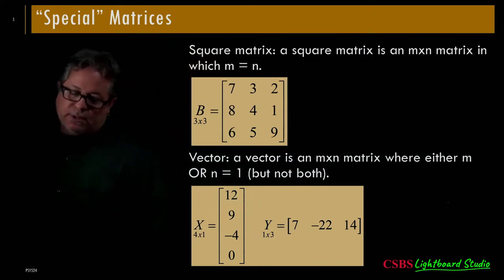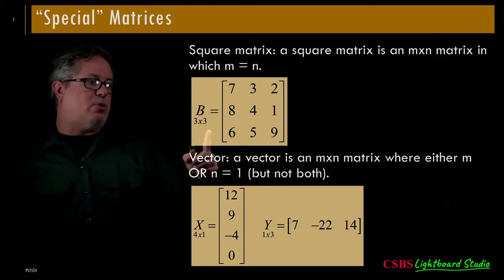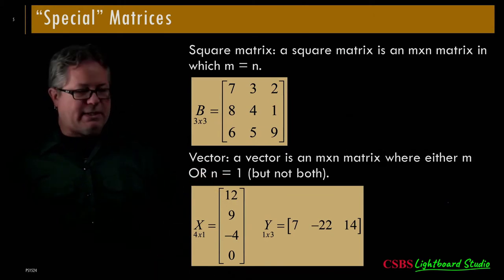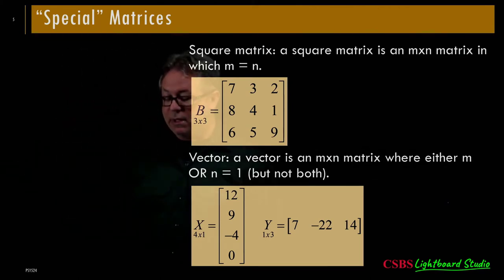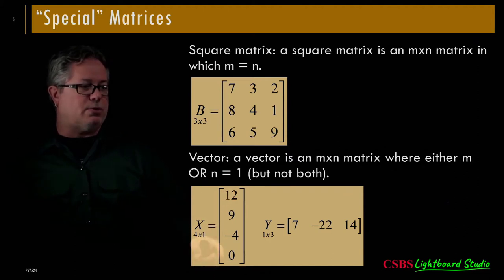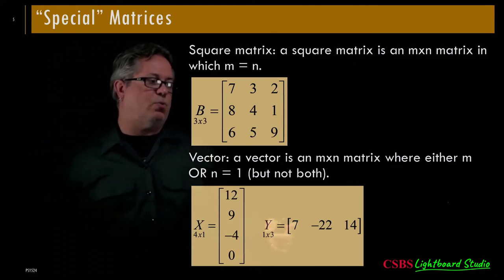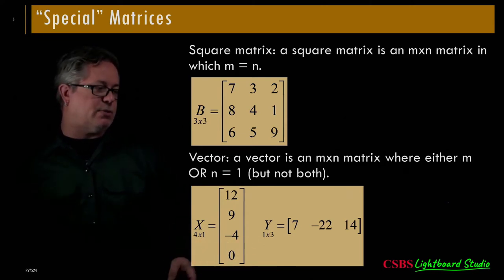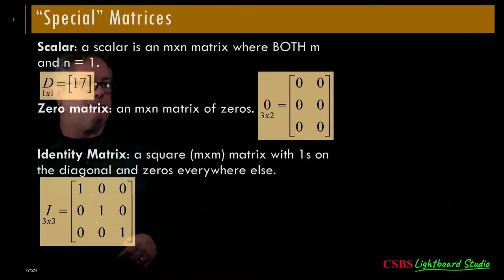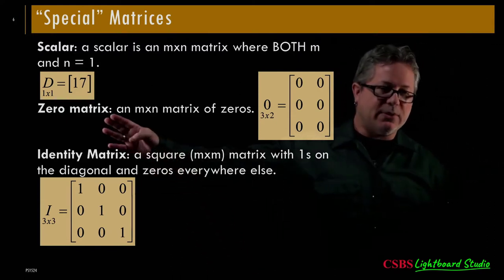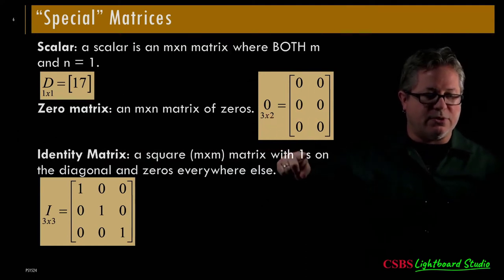There are special matrices that come up a lot, like a square matrix where the rows and columns have the same number. There's also the term vector — a vector is just a special matrix in which one of the dimensions is 1. A 4 by 1 vector has 4 rows and only 1 column; a 1 by 3 vector has 1 row but 3 columns. Anytime one of the dimensions is 1 and the other is not, it's a vector. There's also a zero matrix — literally just a matrix of all zeros, regardless of size.